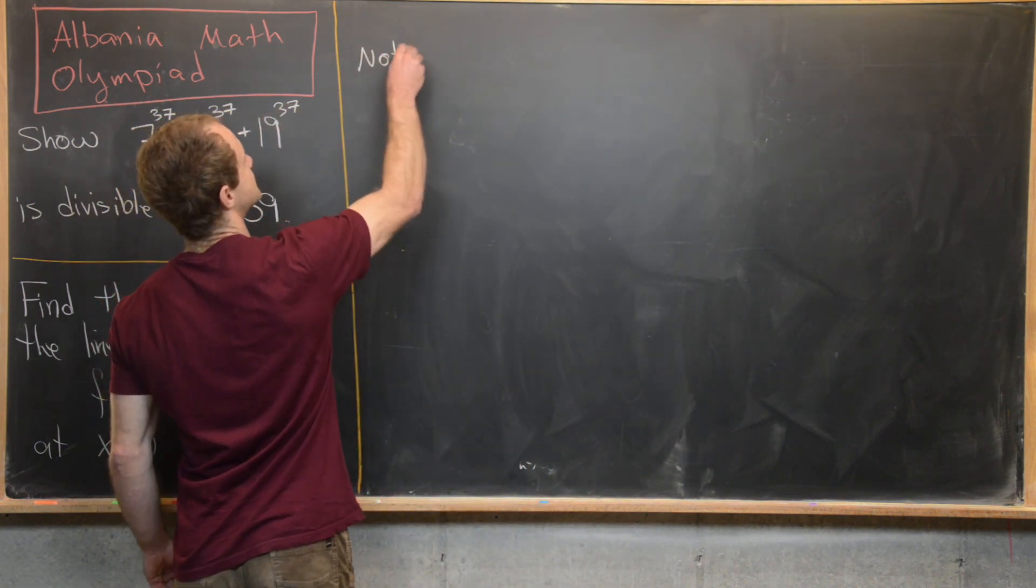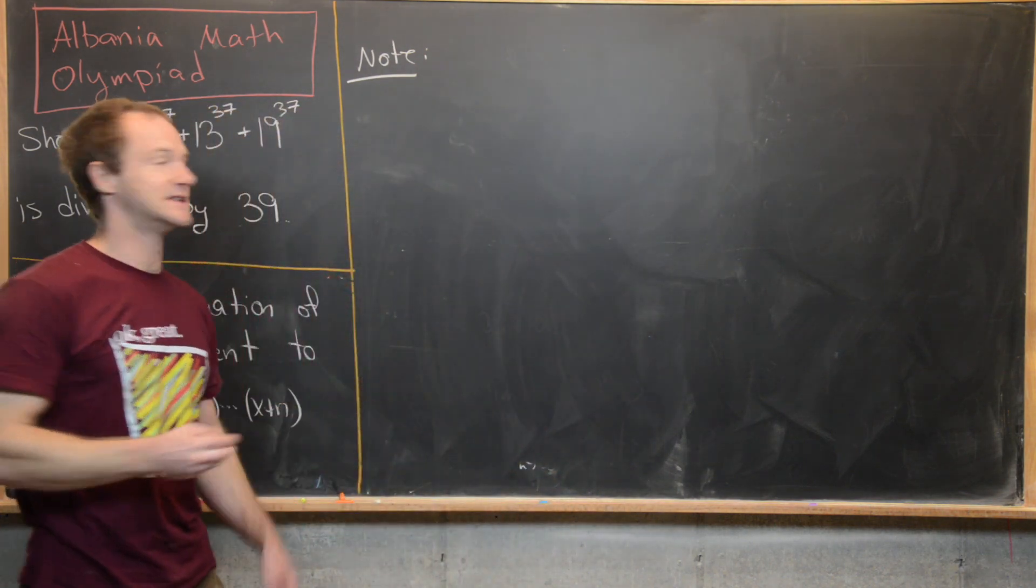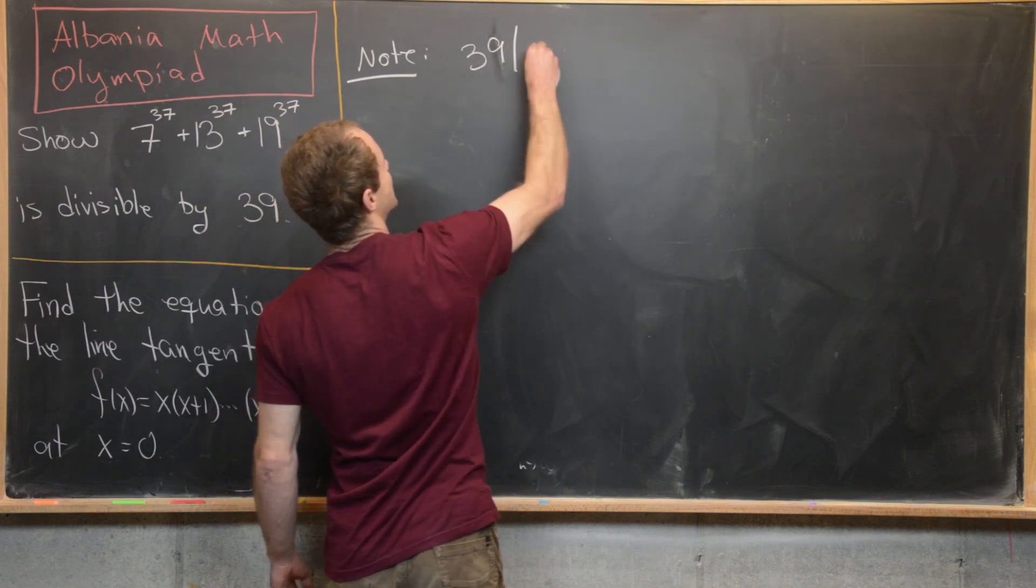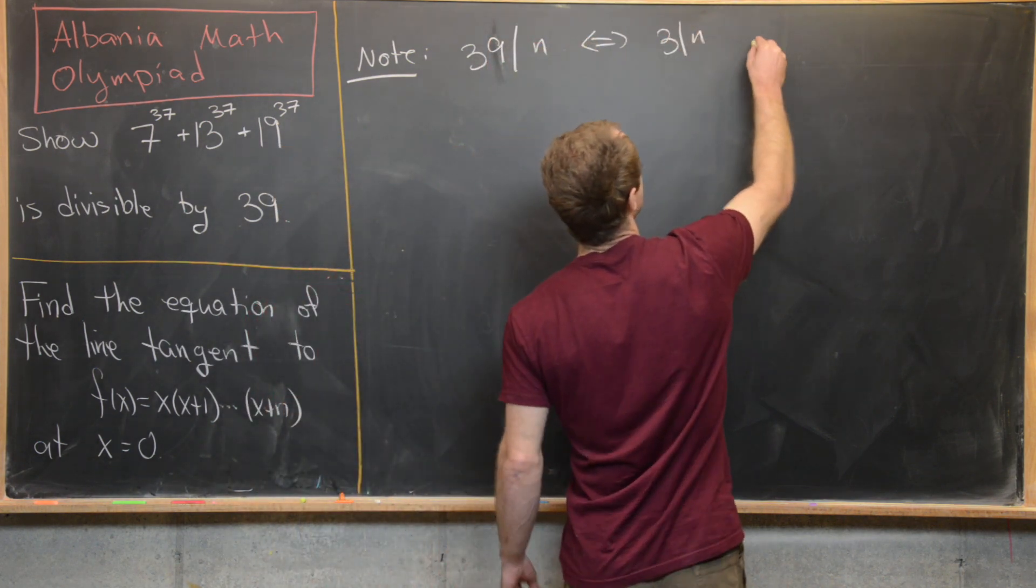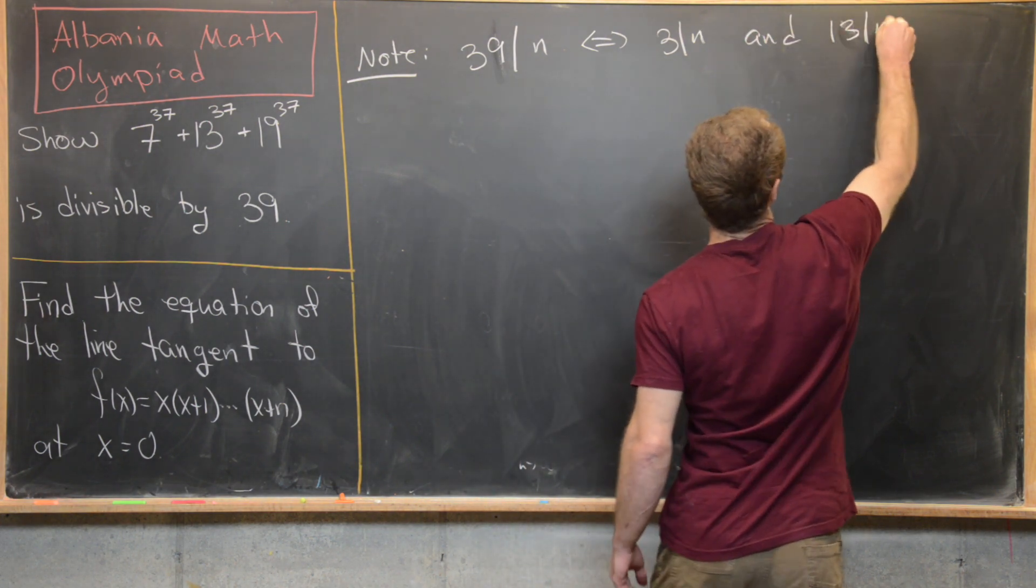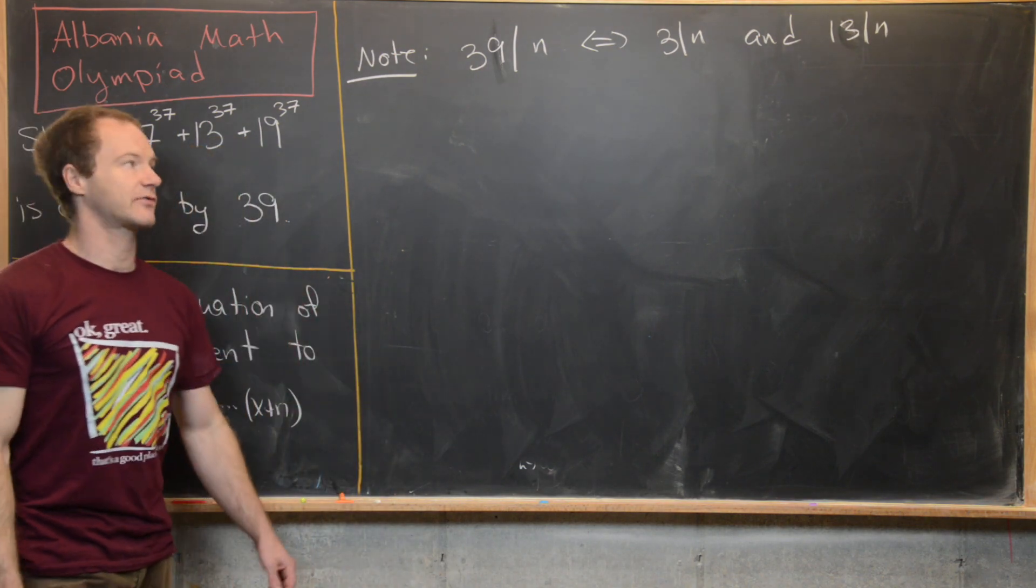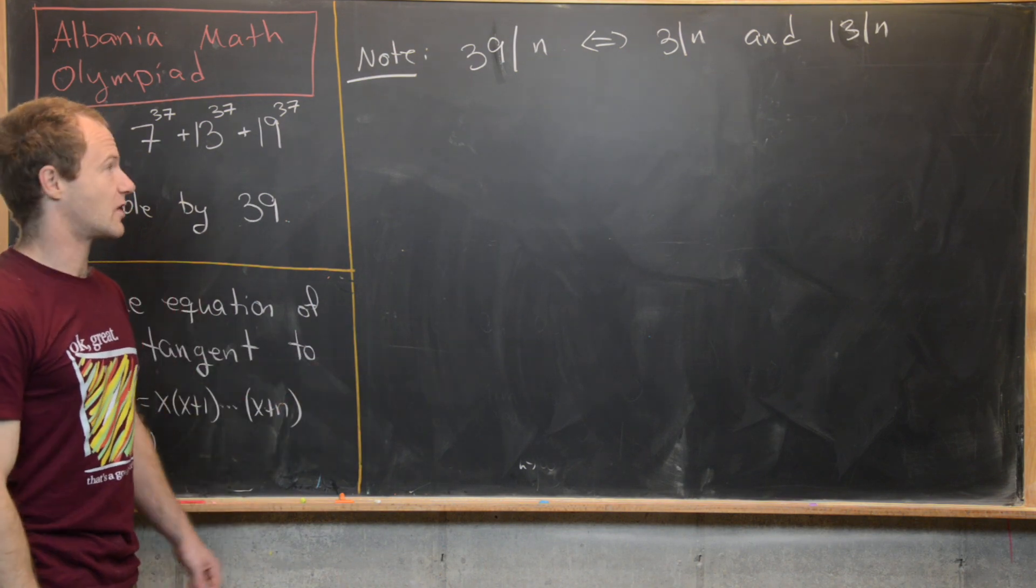Maybe the first thing that we can notice is that 39 divides a number n if and only if 3 divides n and 13 divides n, and that's because 3 and 13 are relatively prime. In fact, 3 and 13 are both primes. 39 factors as that product of primes.